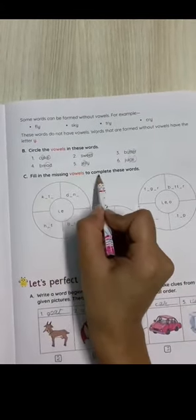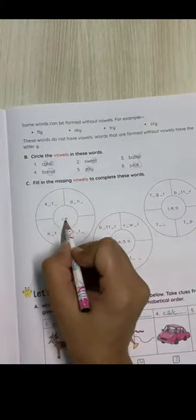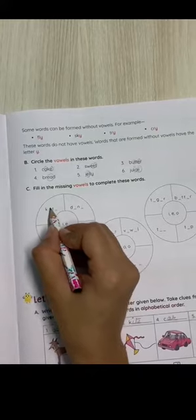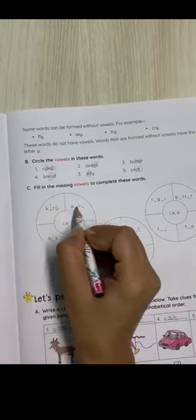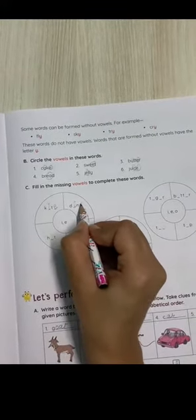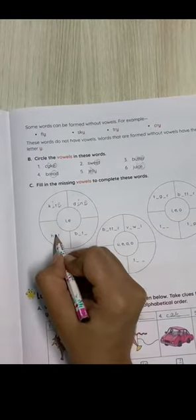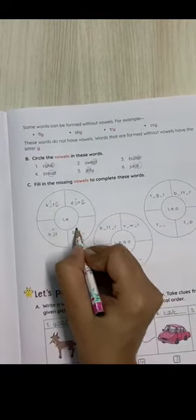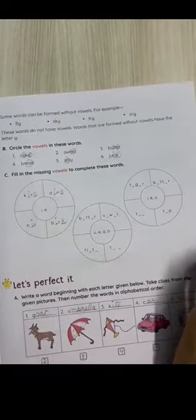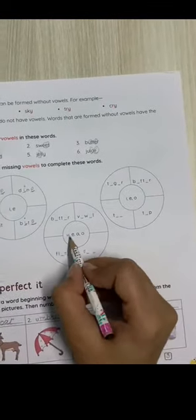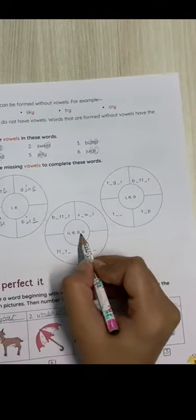Fill in the missing vowels to complete these words. Here we have to use I and E vowel. K-I-T-E kite, D-I-N-E dine, H-I-T hit, B-I-T-E bite. Here we have to use U, E, A, and O.